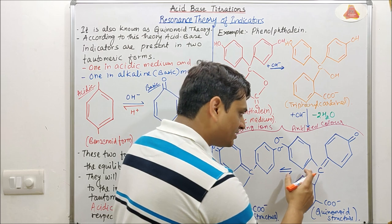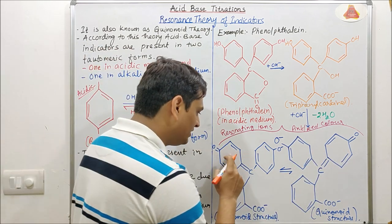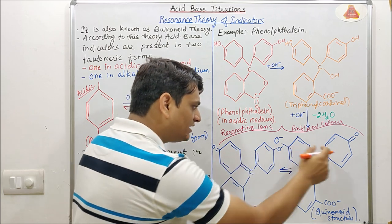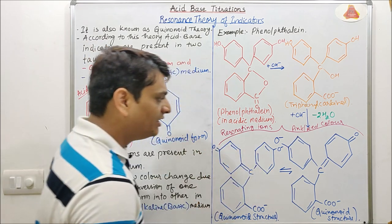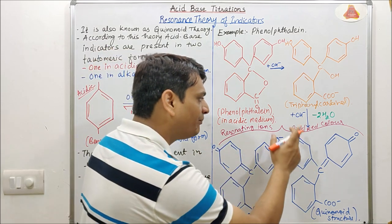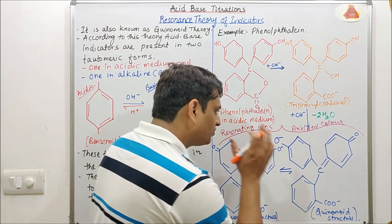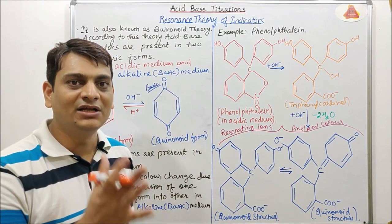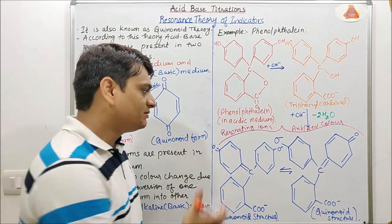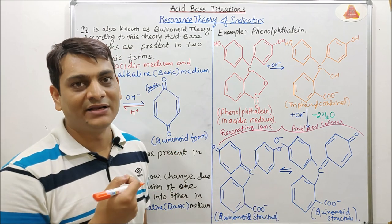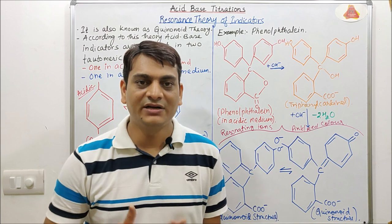In this structure you can see the quinoid ring, and both these ions will be present in the form of resonating ions showing resonance. The color of these ions will be pink or red color in basic or alkaline medium. This is the main reason behind the color change — phenolphthalein is colorless in acidic medium and pink or red in alkaline medium. This is the complete detail about resonance theory under acid-base titration.